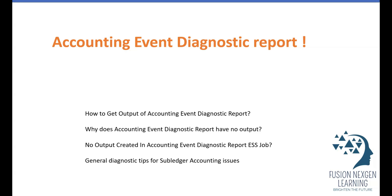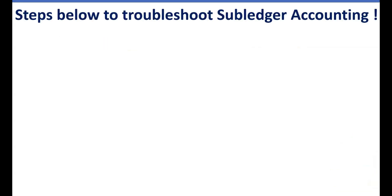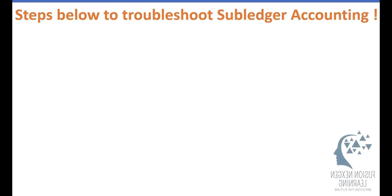To troubleshoot, you need to perform the following steps to check whether the rules you have created are working correctly. When running Create Accounting, if you see an exception with errors and the queue of event code combinations not getting derived, you generally face such issues when utilizing custom sub-ledger accounting. These issues are typically normal in all implementations, so we will cover all these steps one by one.